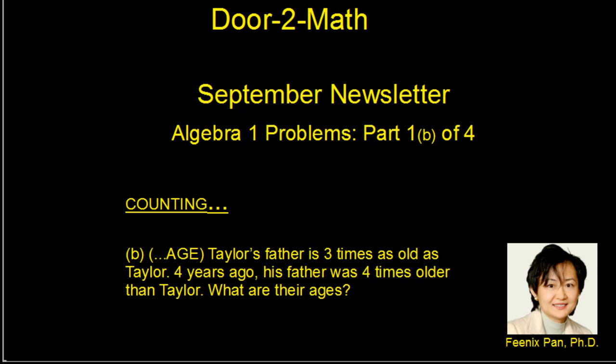And what we're doing here is counting age. It's a second type of counting where the timeline is involved. Taylor's father is three times as old as Taylor. Four years ago, his father was four times older than Taylor. What are their ages? So let's get on to our blackboards and let's solve this problem.